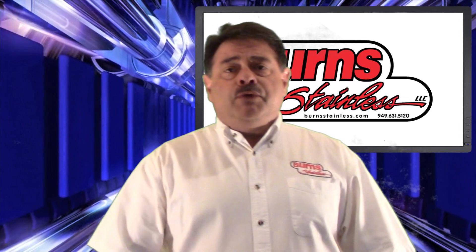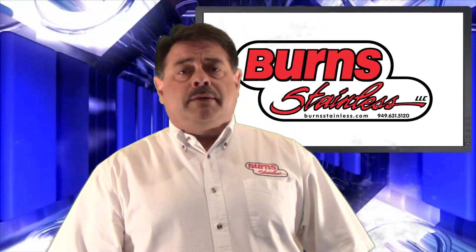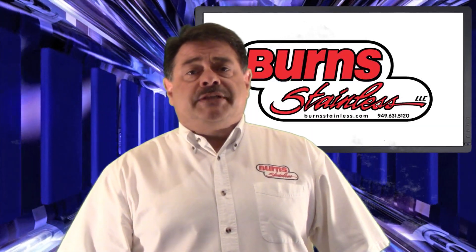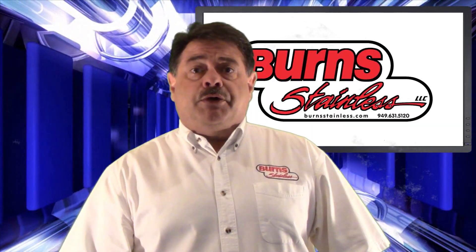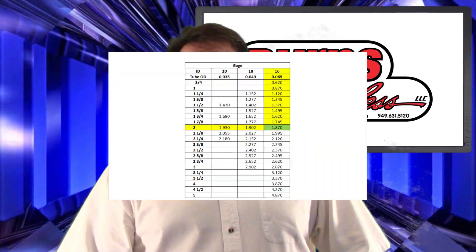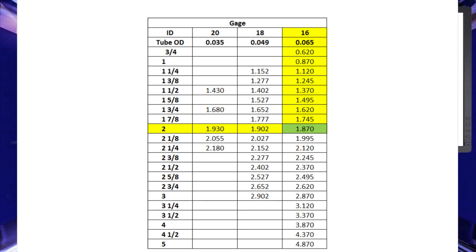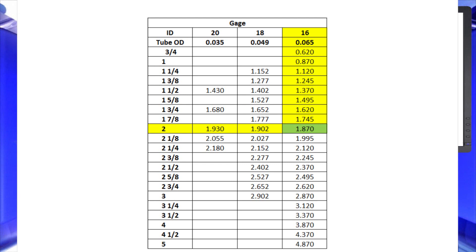For tubing, if we know the inside diameter of the tube that we want, the outside diameter is given by: OD = inside diameter plus 2 times the wall thickness. Or conversely, the inside diameter is given by: ID = outside diameter minus 2 times the wall thickness. Here is a table of 304 stainless steel tube sizes carried by Burnt Stainless. For example, a 2 inch 16 gauge tube has a wall thickness of 65 thousandths of an inch and an inside diameter of 1.87 inches.